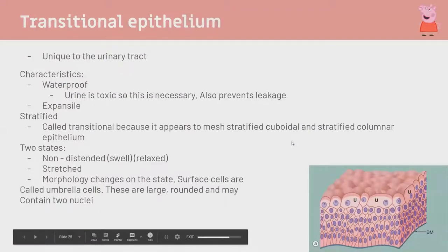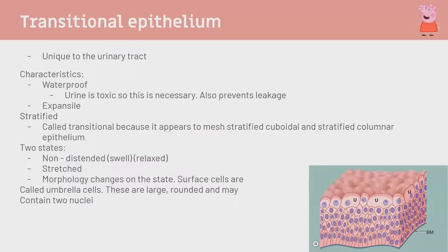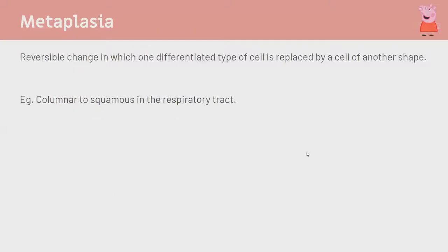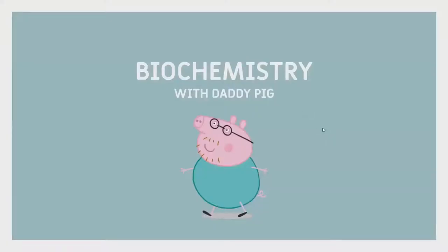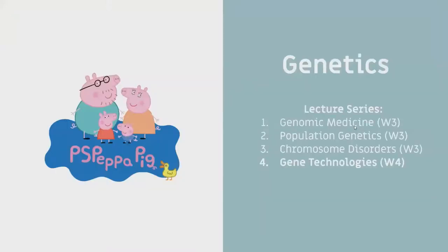Transitional epithelium is very low yield and exclusive to the bladder. It's waterproof, necessary because urine is toxic. It's expandable and contractile - it can distend and become waterproof or relax, assisting urine flow. Metaplasia is when irritation causes a change of cell type morphology; for example, pseudostratified epithelium in the respiratory tract exposed to toxins might start producing squamous cells to rapidly protect the underlying viscera.